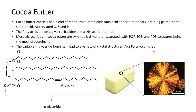Cocoa butter consists of different fatty acids: monounsaturated oleic fatty acids, and saturated acids including palmitic and stearic acid — abbreviated as O, S, and P. The fatty acids are on a glycerol backbone in a triglyceride format. Most triglycerides in cocoa butter are symmetrical monounsaturated: POP, SOS, and POS structures being the most predominant. These variable triglyceride forms can lead to a variety of crystal structures, also known as polymorphic fat. Next we'll talk about that variety of crystal structures.